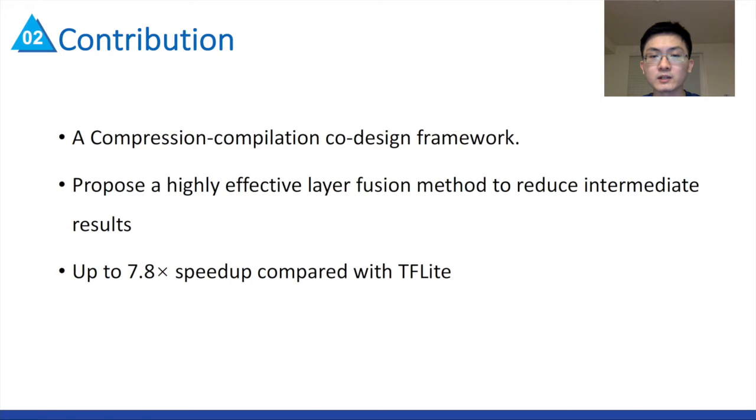In this paper, we propose a compression-compilation co-design framework to optimize the structures of BERT variants for mobile devices. This is the first framework that involves compiler optimization in the architecture search loop, aiming to co-optimize the model accuracy and computation resource usage. We also propose a highly effective layer fusion method to reduce intermediate results to achieve lower latency on both mobile CPU and GPU. Our framework outperforms the state-of-the-art framework TFLite by up to 7.8 times speedup, thus achieving the least latency while executing on mobile devices.